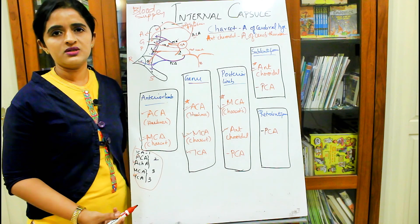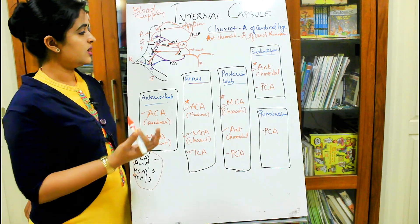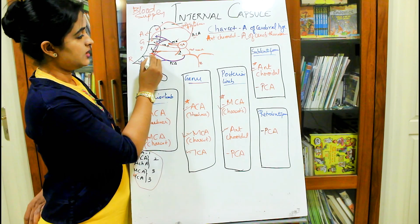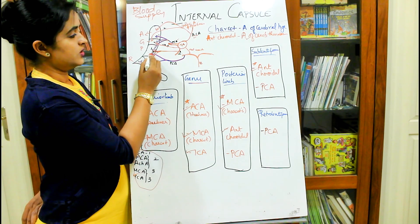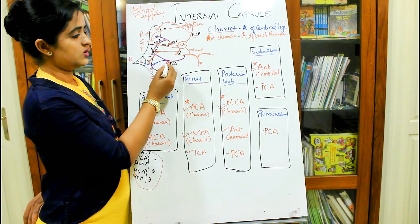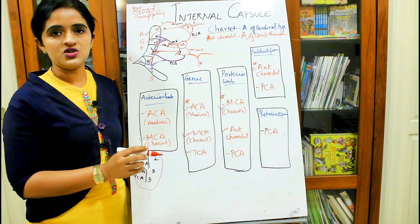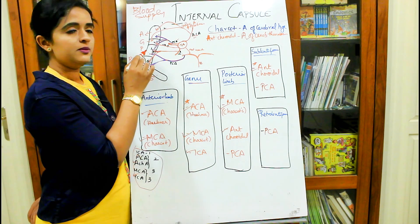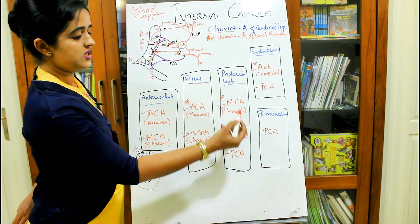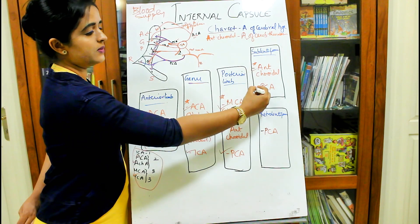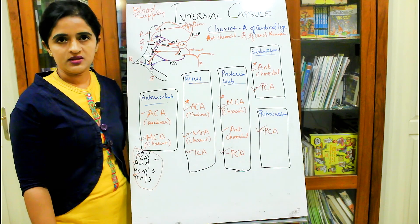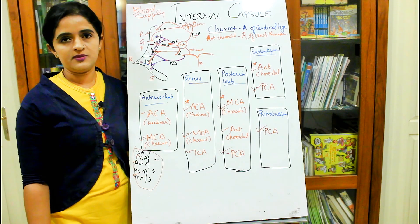Finally, the posterior cerebral artery also gives three branches. It supplies the posterior limb, then the retrolentiform part, and also the sublentiform part of the internal capsule. So the three regions supplied by the posterior cerebral artery are: posterior limb, retrolentiform, and sublentiform.